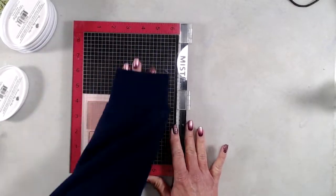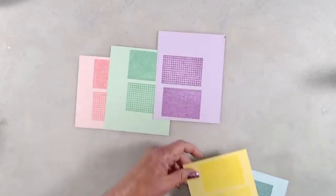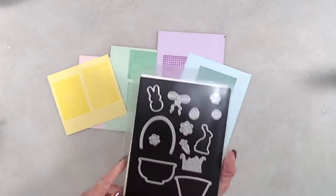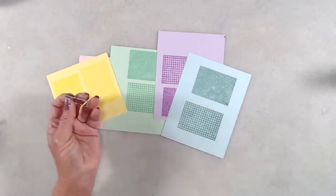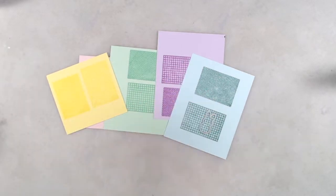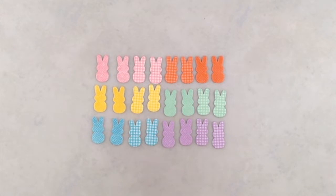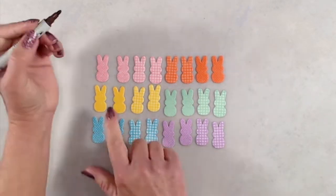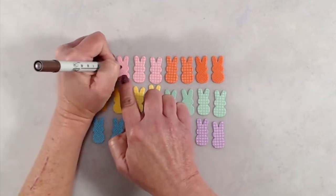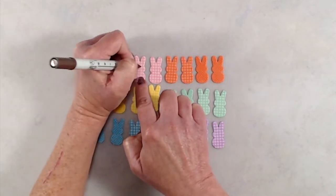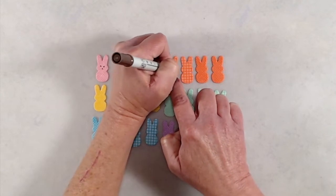Once I was done stamping the backgrounds, I used the little bunny die from the build a basket die set and cut out a whole bunch of peeps. I did change up a couple of things - I decided to change the color of the yellow ink and the blue ink that I had originally used, but I'll be sure to have all of the colors that I used in my finished cards along with all of the products listed in the description box below for you.